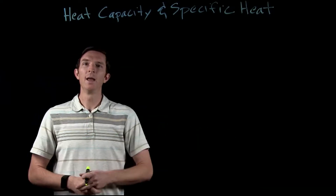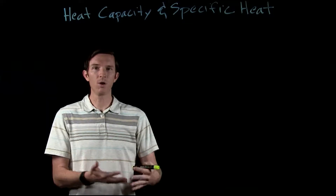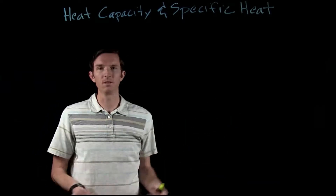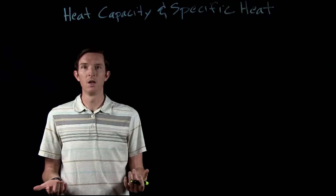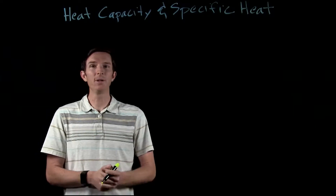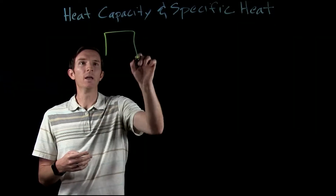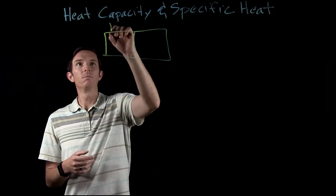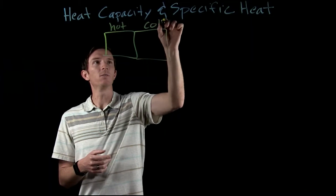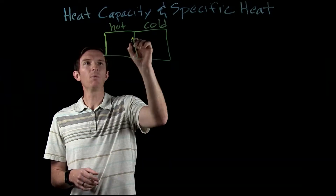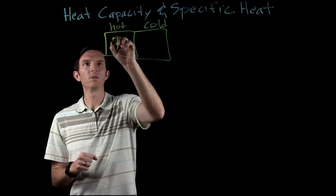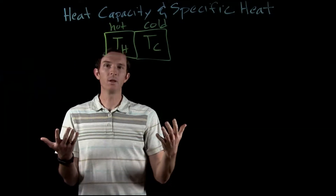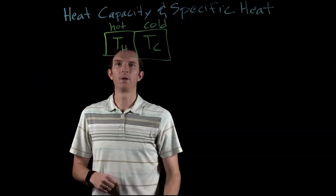We want to be able to measure and quantify how much heat is transferred. We can't simply take a heat measurement instrument and stick it into something; we need something we can actually measure. What we can measure when heat is transferred is temperature. So we have two objects — something hot and something cold — and initially they're separate, starting at a hot temperature and a cold temperature respectively.